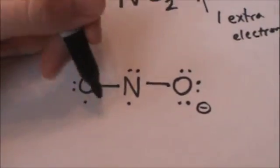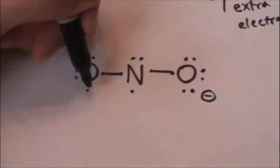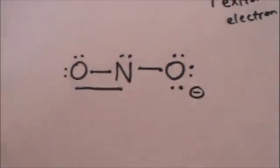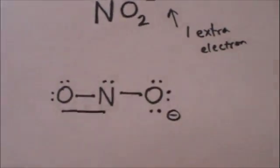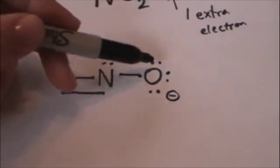Now over here what do we need to do to make this nitrogen happy? We have 2, 4, 6, and we have these two unpaired electrons we can bond. So now each atom has 2, 4, 6, 8 electrons. All those atoms are happy with their complete octets.